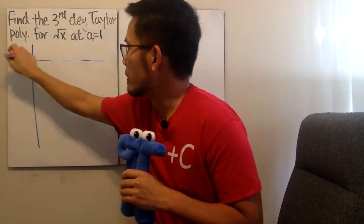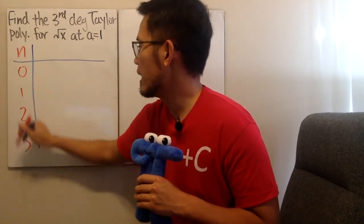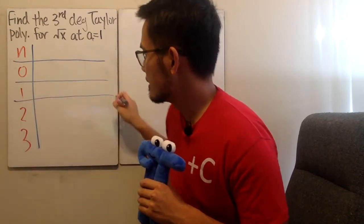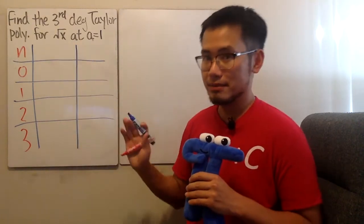So, for the n, we just have to go from 0, 1, 2, 3. That is it. And later on, I will also show you guys the graph, but that will be at the end.